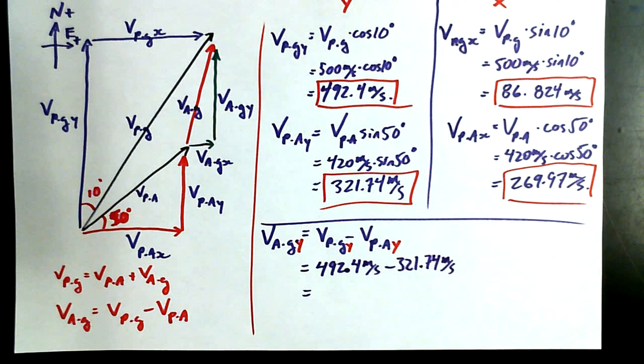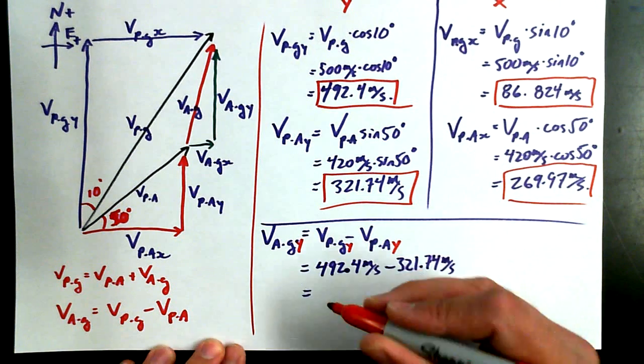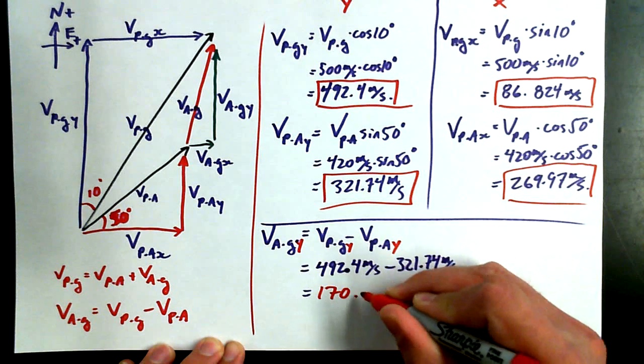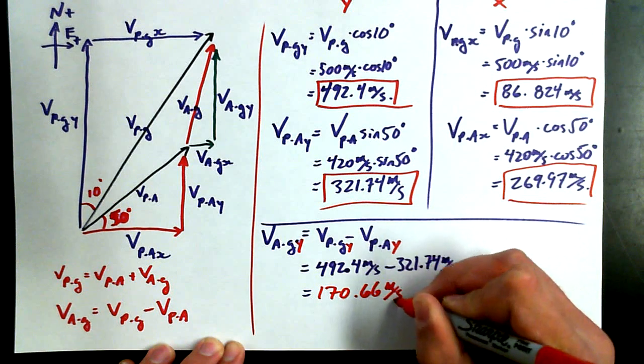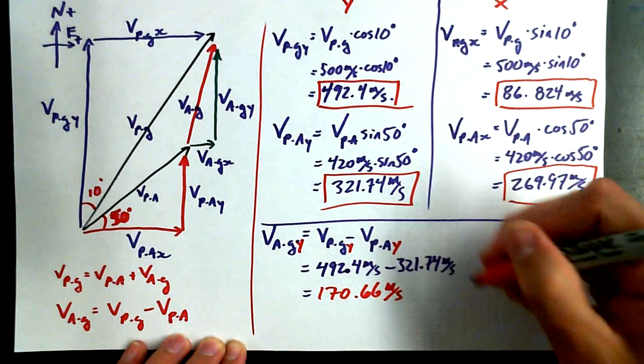All right. What's V, A, G in the Y direction? Somebody who can do subtraction. Somebody other than Burt. Burt is just flexing his mathematical muscles too much today. Calculator. Yes, Miss Patel. About 170.66. 170.66 meters per second. I like it.